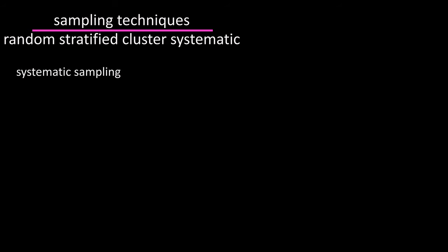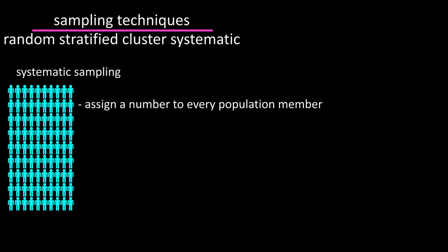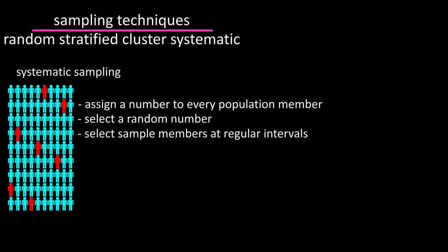A systematic sample is where a researcher will assign a counting number to every member of the population, then select a random number, then select members for the sample at regular intervals from the starting random number that was selected.